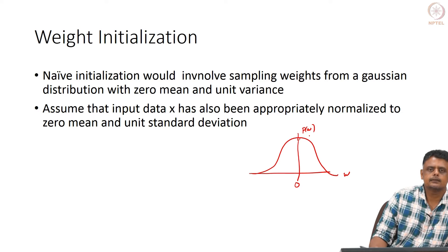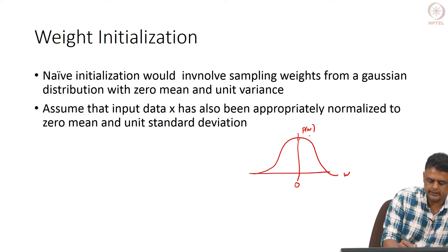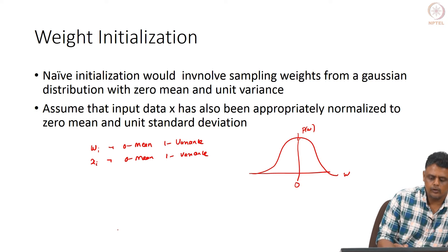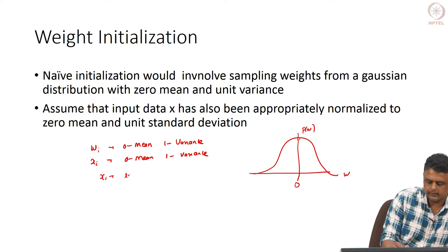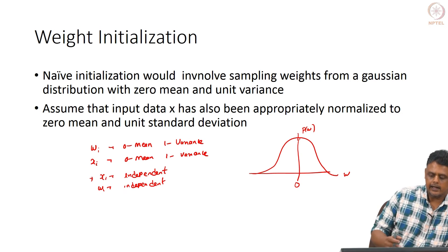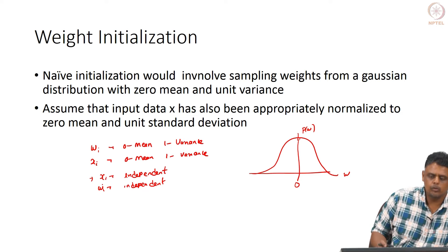Assume your input data X has been normalized via z-score normalization to have zero mean and unit standard deviation, and weights W_i are also sampled with zero mean and unit variance. We also assume the individual X_i are independent and W_i are independent — though for structured data like images this need not always be true.